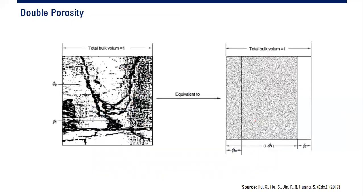This depicts double porosity. From the visualization of a real rock, you can see matrix porosity — the smaller pore spaces between grains — and also fracture porosity — the larger pore spaces from fractures. We call it double porosity because there are two systems: matrix porosity and fracture porosity.